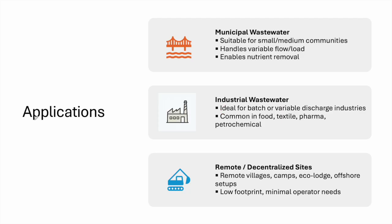Applications of the SBR include municipal wastewater treatment for small to medium communities, handling variable flow loads with nutrient removal capability. It is also used in industries with batched or variable discharge — common in food, textile, pharma, and petrochemical wastewaters. Additionally, it serves remote or decentralized sites such as villages, camps, eco-lodges, and offshore setups as a decentralized wastewater treatment system, with a low footprint and minimal operator requirements.